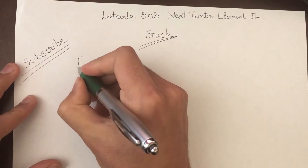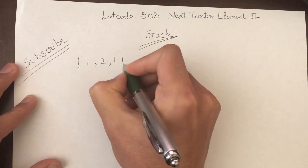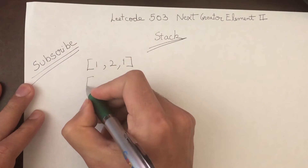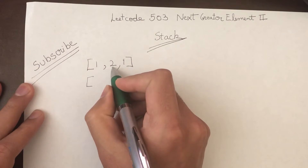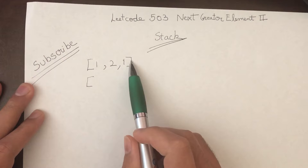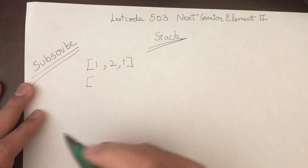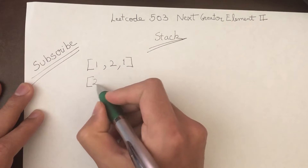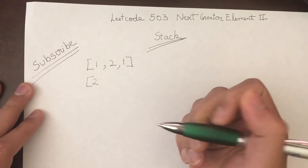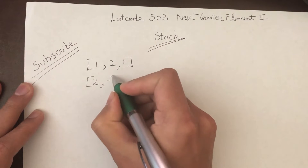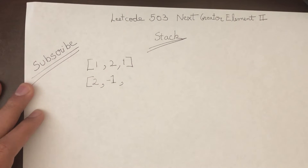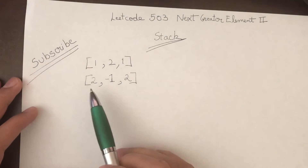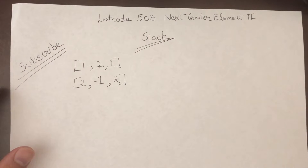The question gives us an example of [1, 2, 1] and we want to find the next greatest element for all three elements. For the first 1, the next greatest element is 2. Remember, the question says this is a cyclic array, so after the end we go back to the start. For 2, even if we go through the entire cycle, there is nothing greater than 2, so we return -1. For the last 1, going back we find 2, so the answer is [2, -1, 2].